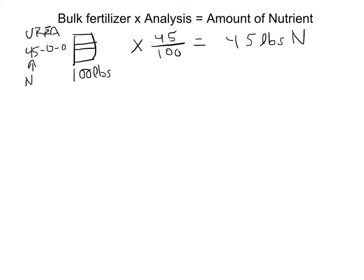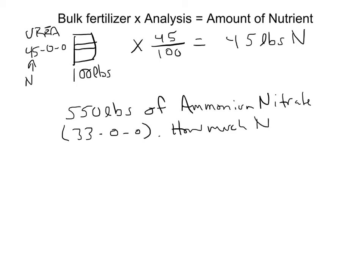Let's say we have 550 pounds of, let's pick ammonium nitrate, 550 pounds of ammonium nitrate. And we'll have a parenthesis, that's 33, the analysis is 33-0-0. How much nitrogen do we have?